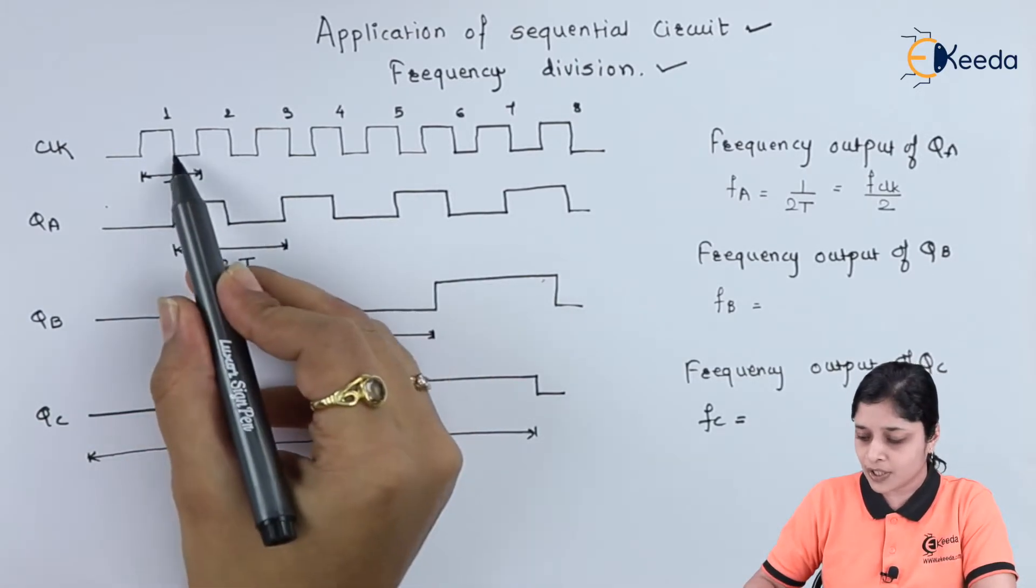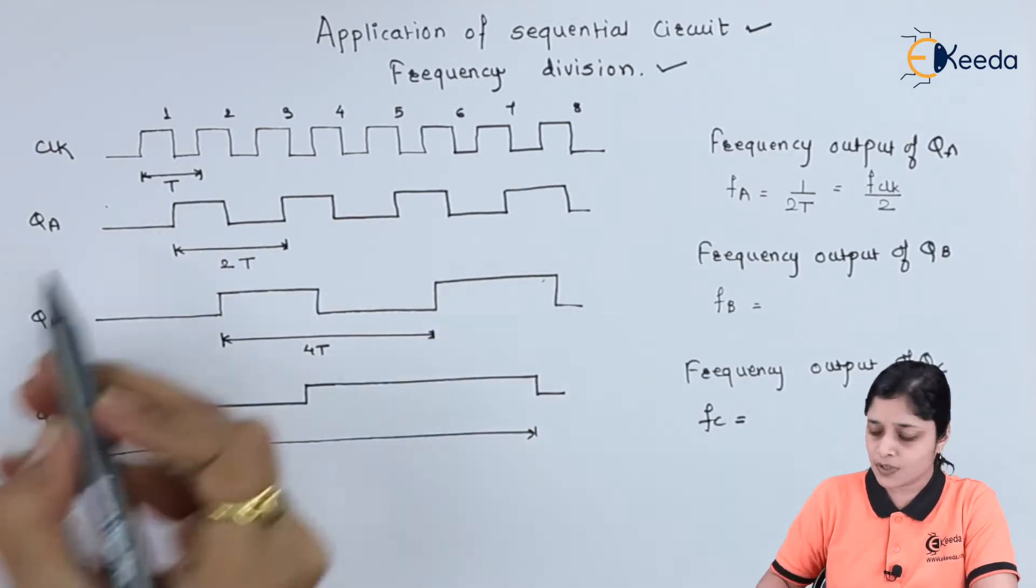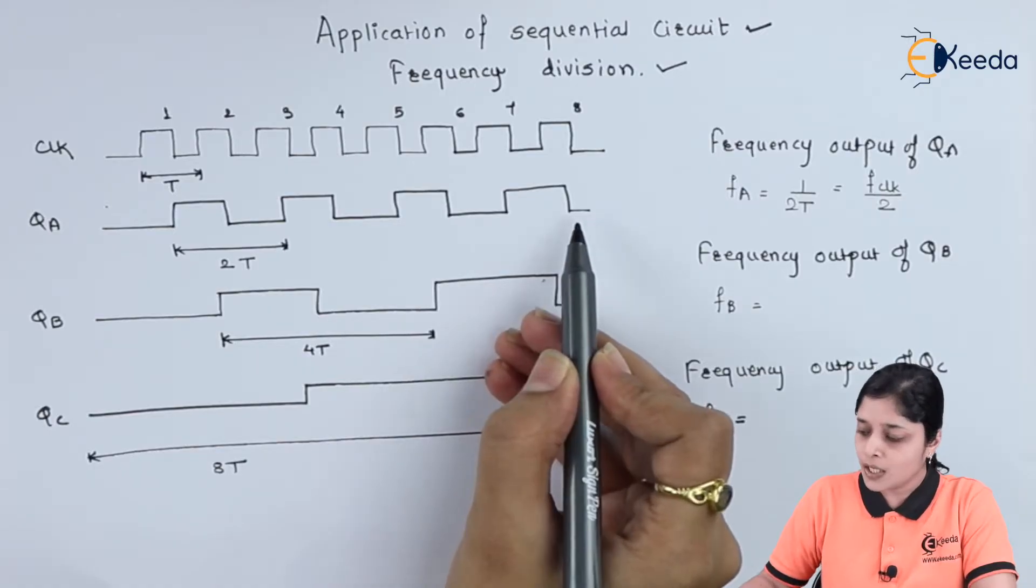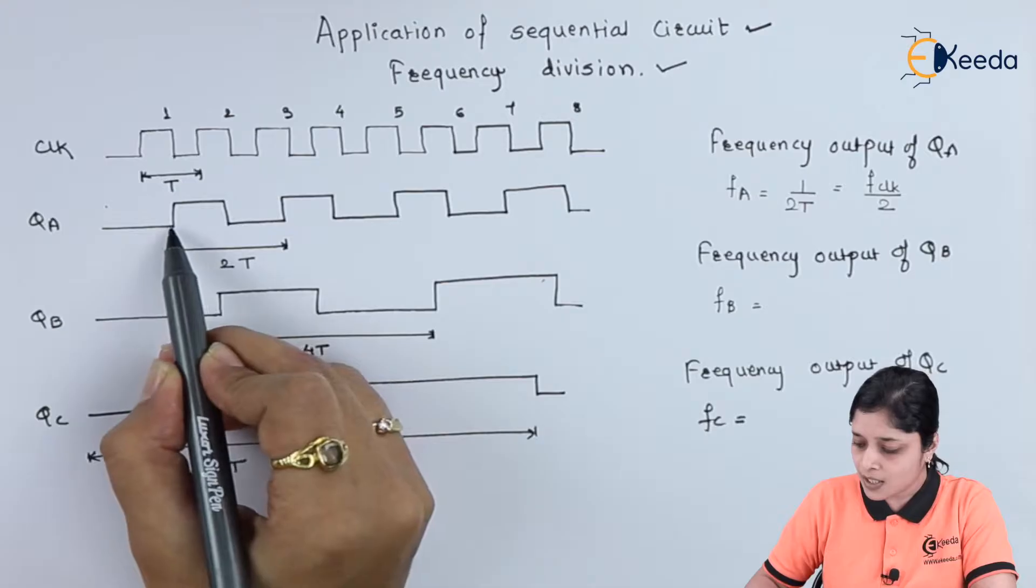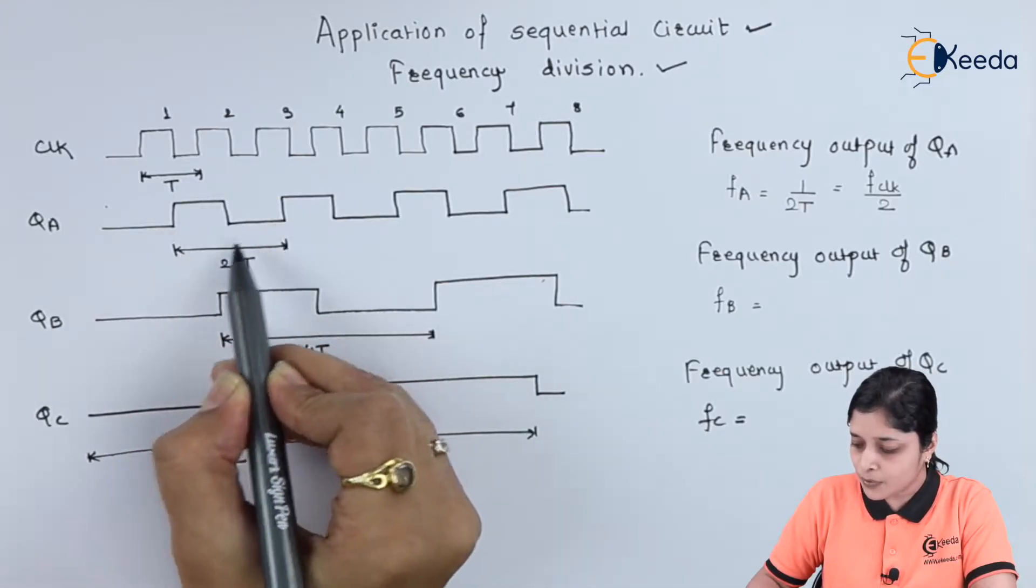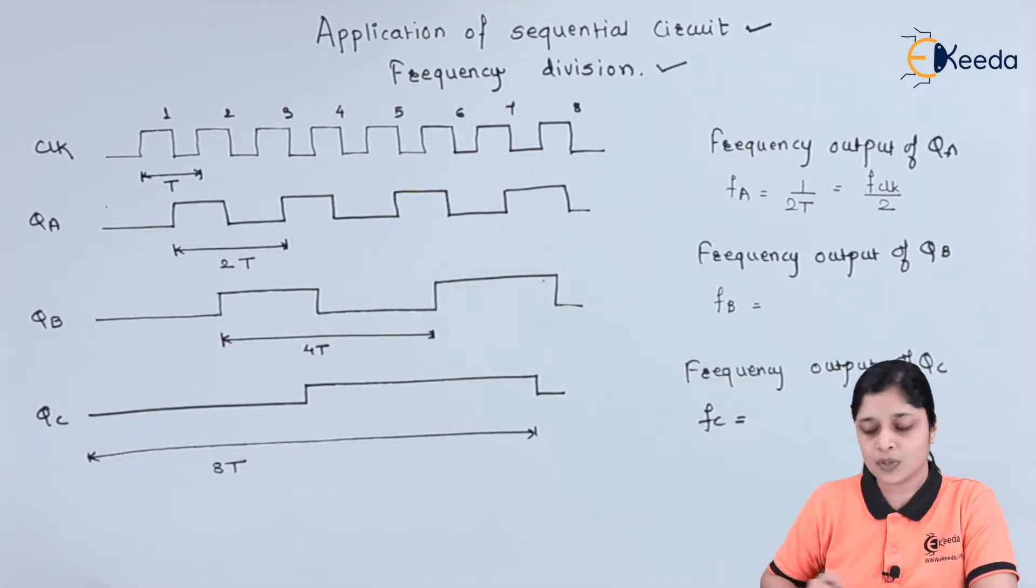Whenever negative edge triggering is there, then it will change its output. So this is the output diagram for QA. Now we will focus on the time period of QA. This is the complete time period for QA, that is, it is nothing but 2T. We are going to write in terms of the basic time that is T.